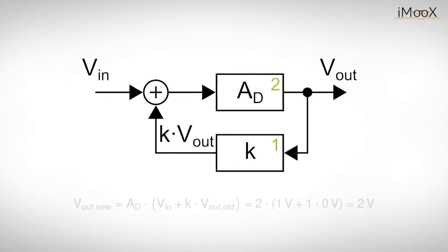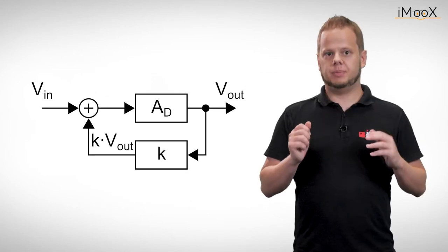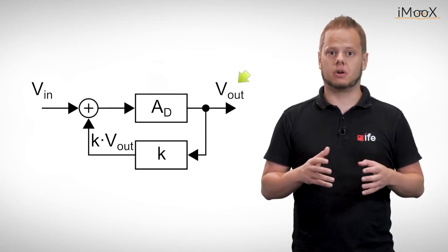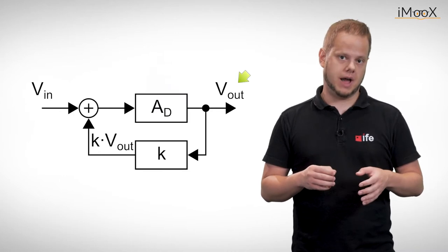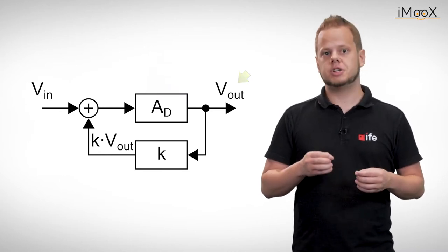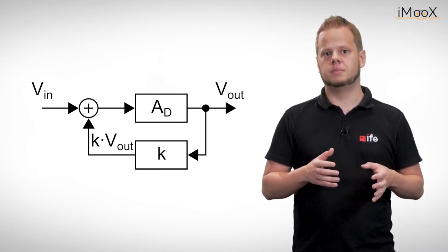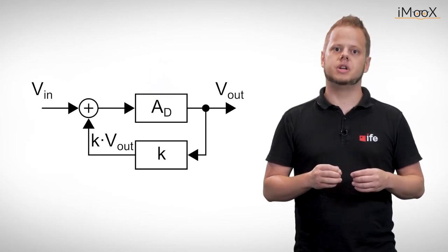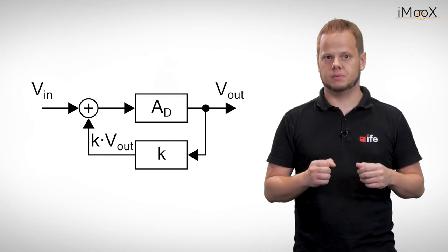This would be true even if we just apply a non-zero input voltage for a very short time. At the beginning this does not make much sense, as the output voltage would just skyrocket towards either plus or minus infinity. But operational amplifiers can only provide a limited output voltage. This means the output voltage only reaches a certain minimum and maximum value.